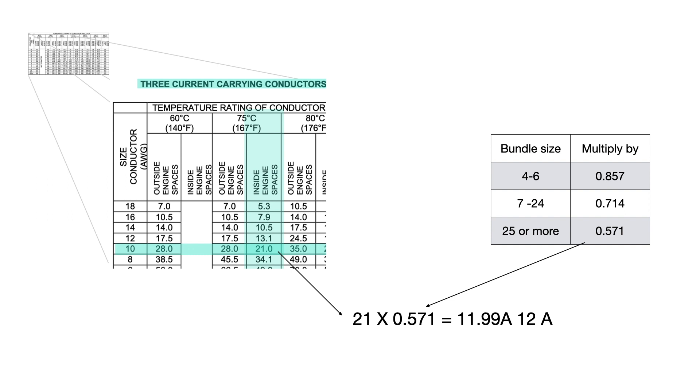This is still safely above our original load of 10 amps, but only by 2 amps. And yes, this is an extreme example to make a comparison between the initial rating of 30 amps to the reduced rating now of just 12 amps.